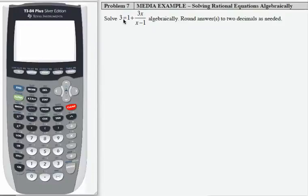Here we're given a rational equation: 3 equals 1 plus 3x divided by x minus 1, and we're asked to solve algebraically.